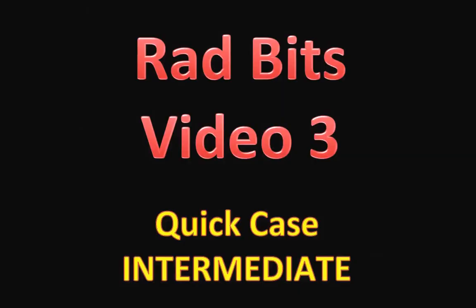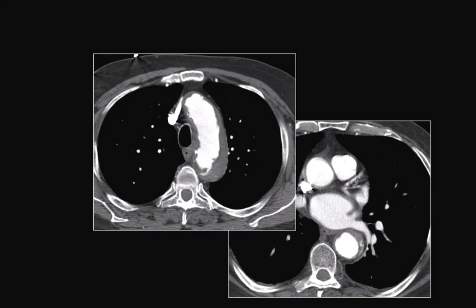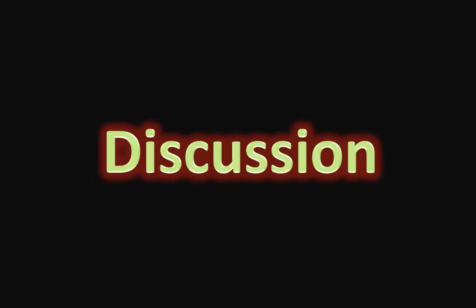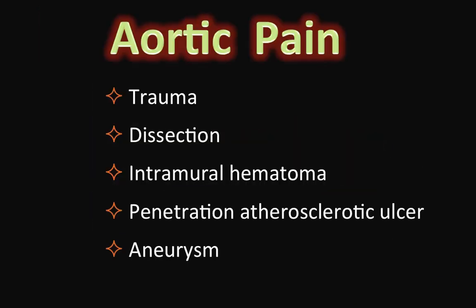Hi again. Today's case is an intermediate level case. As usual, when you see the sign, please pause to think about the images and the presented information. This is a 57-year-old male patient who presented with acute severe back pain. Pause here for discussion. These are the possibilities of pain that arises due to acute aortic injury.